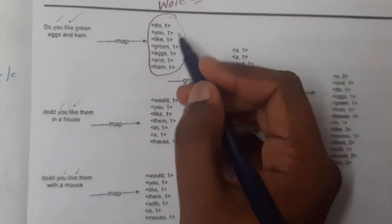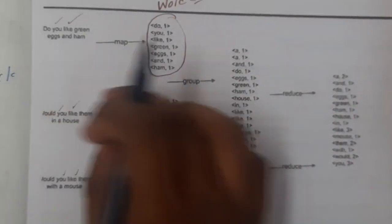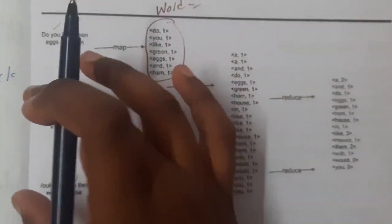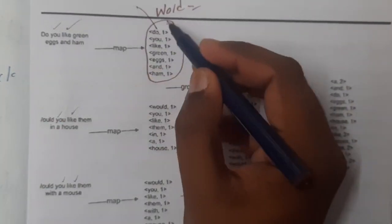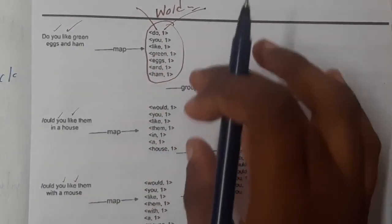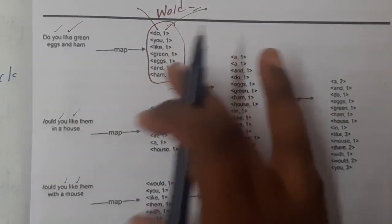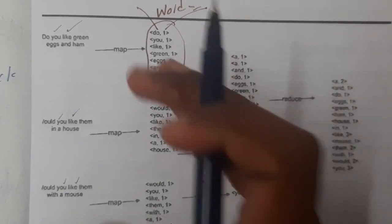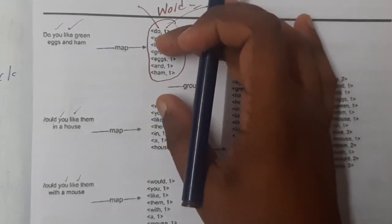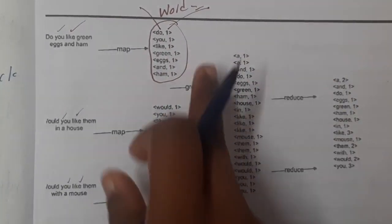In the map phase, each word is represented as a key-value pair showing its count. For example: do-1, you-1, like-1, green-1, eggs-1, and-1, ham-1. This is the map function — mapping each word into a key-value pair where the key is the word and the value is the count. The group step then groups common words together into a single group by combining the lists.